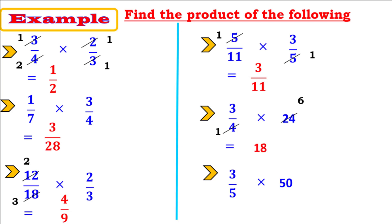By the same way: 3 over 5 times 50. Find the common factor between the denominator 5 and the whole number 50 — it's 5. Divide: 5 divided by 5 equals 1, 50 divided by 5 equals 10. Multiply the remaining factors: 3 times 10 equals 30.